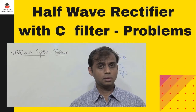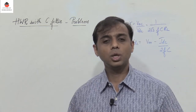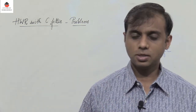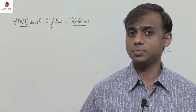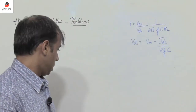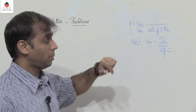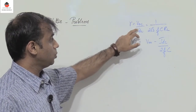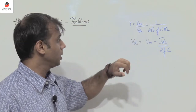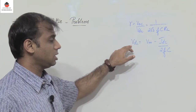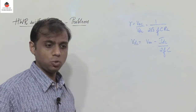Let us consider a few problems under half wave rectifier with capacitor filter. To understand the working of a half wave rectifier with capacitor filter, make sure that you watch the lecture video whose link has been given in the description. These are some expressions you should remember: gamma equals VAC by VDC, which equals 1 by 2 root 3 of FC·RL, and VDC equals VA minus IDC divided by 2FC.